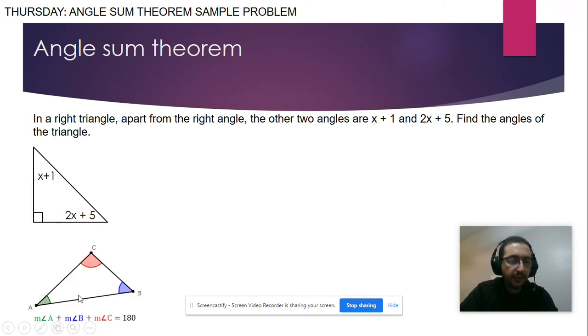So we say that the sum of all three angles inside of a triangle, any triangle, it doesn't matter which shape, will be equal to 180. So 90 plus x plus 1 plus 2x plus 5 equals 180.